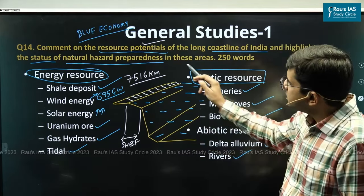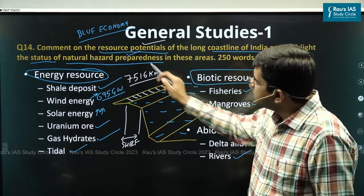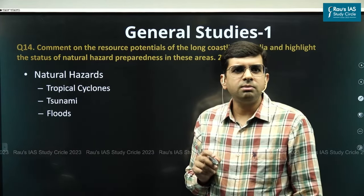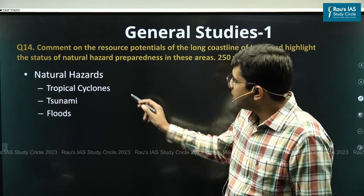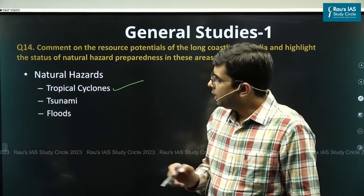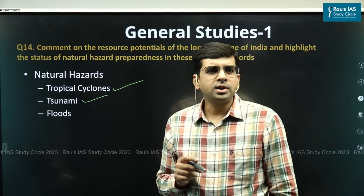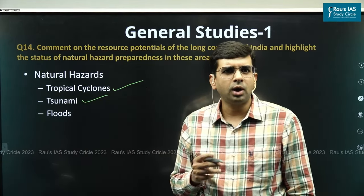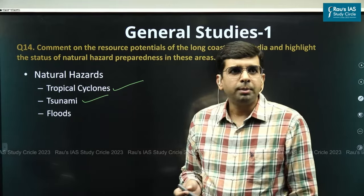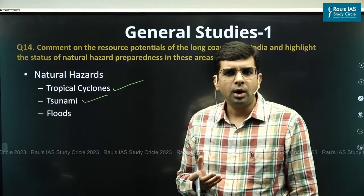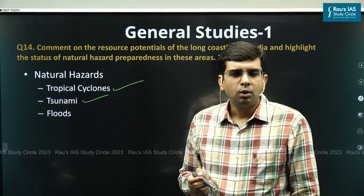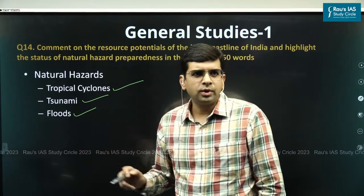Now for the second demand — natural hazard preparedness. We first need to mention what extreme natural events occur at the coastline of India. Tropical cyclones hit the coastline frequently, and tsunamis — gigantic waves originating from high-magnitude underwater earthquakes — also pose a threat. The Indian tsunami of 2004, tropical cyclone Biparjoy, MOCHA, and Mandus cyclone are prominent examples. The coastline is also prone to intense floods.